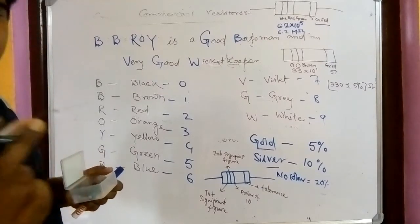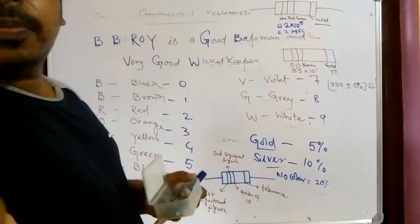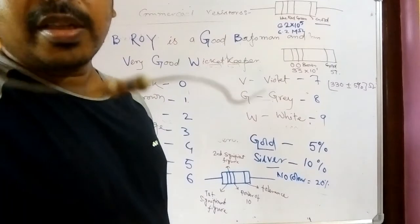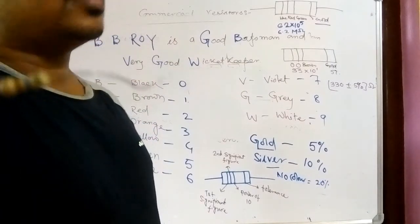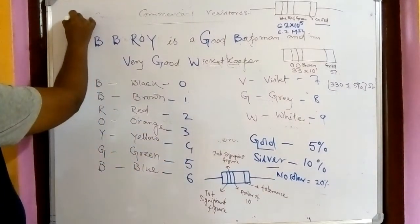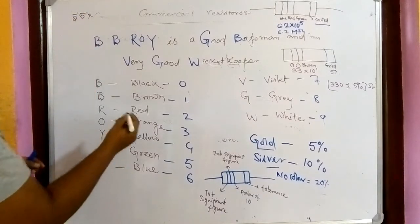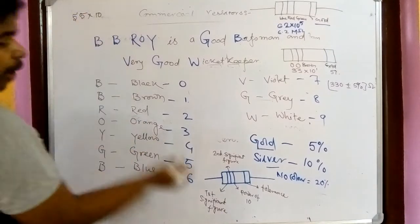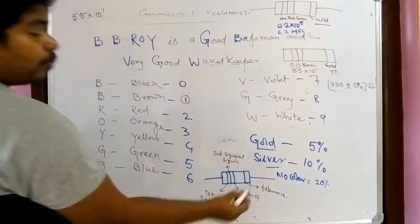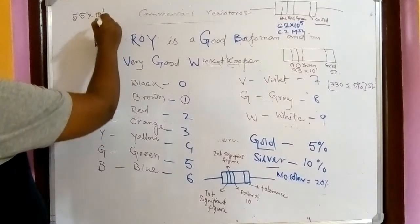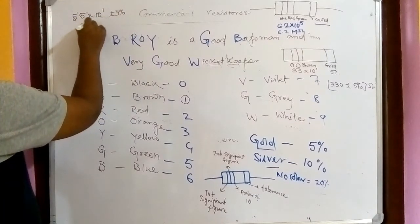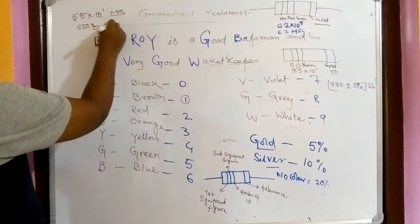Here is another resistor: the first two bands are Green (5, 5), the third is Orange (power of 10³ — wait, 10 to the power 1), and the last is Gold (±5%). So the value is 550 Ω ±5%. This is how we read the value of any carbon resistor using color codes.